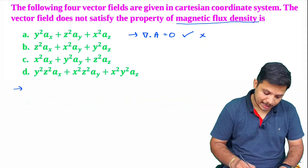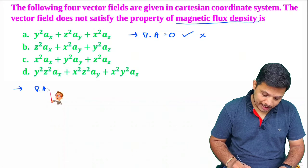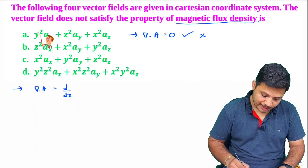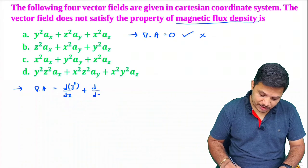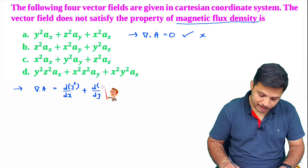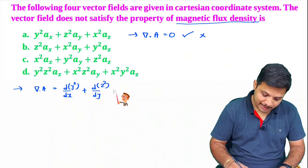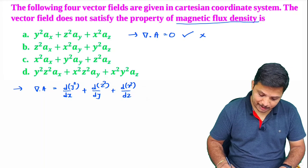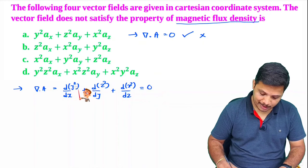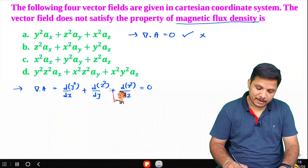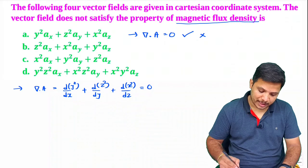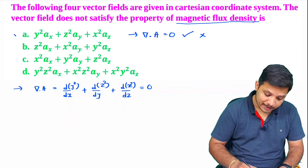Let us check vector A. Computing del dot A: differentiation of the x-component (y²) with respect to x, plus differentiation of the y-component (z²) with respect to y, plus differentiation of the z-component (x²) with respect to z — this equals zero, since y² is constant with respect to x, z² is constant with respect to y, and x² is constant with respect to z. So vector A satisfies the property.